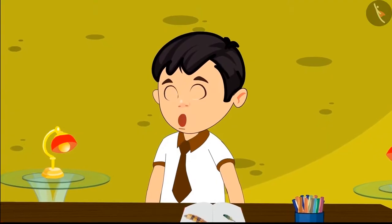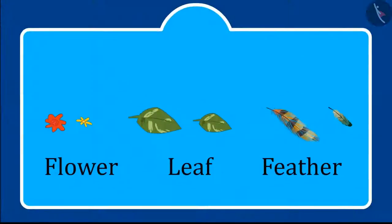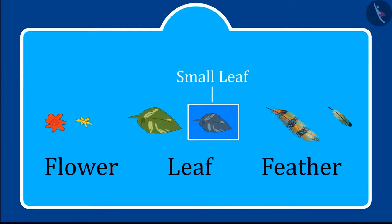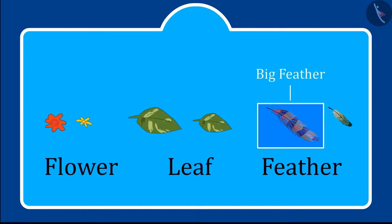Oh wow! All my work is done. Children, you saw how Chotu recognized big and small things. Like this is a small flower and this is a big flower. This is a small leaf and this is a big leaf. This is a small feather and this is a big feather.